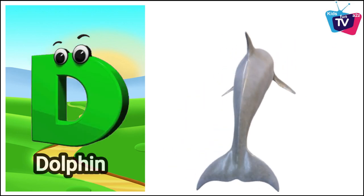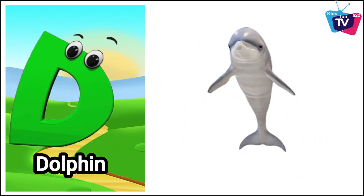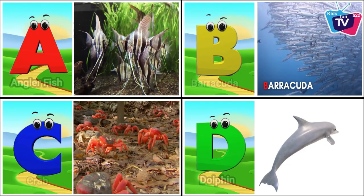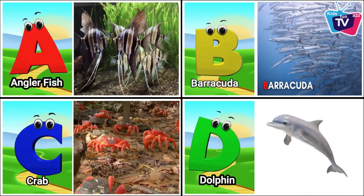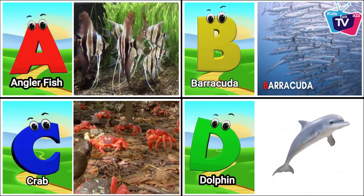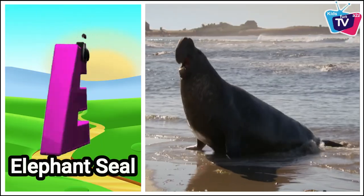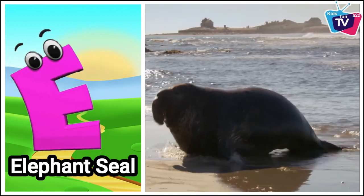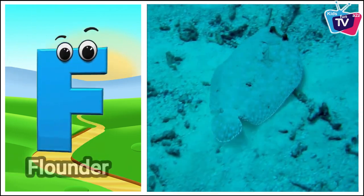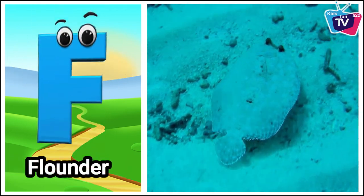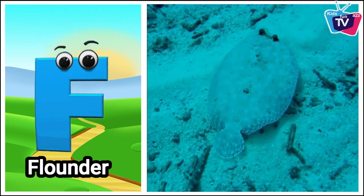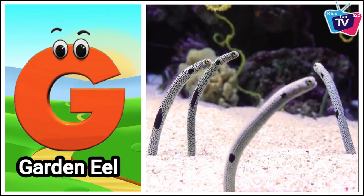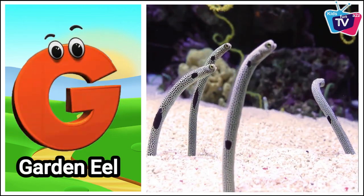E is for elephant seal. F is for flounder. G is for garden eel.